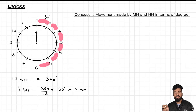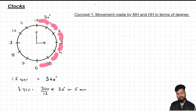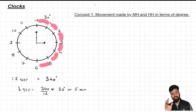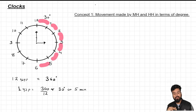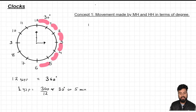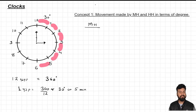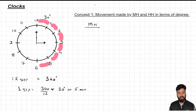To understand this concept, let's say the time on the clock is 3 o'clock. The hour hand, which is the shorter hand, would be at 3 while the minute hand would be at 12. Now, what will be the position of these two hands after one hour? Focusing on the minute hand only — in one hour, the minute hand comes back to its original position, so the total movement made by the minute hand is 360 degrees.